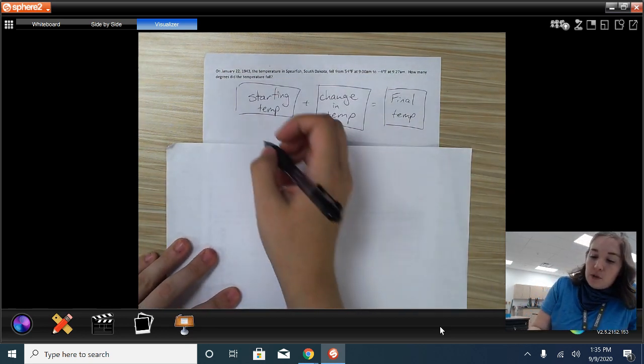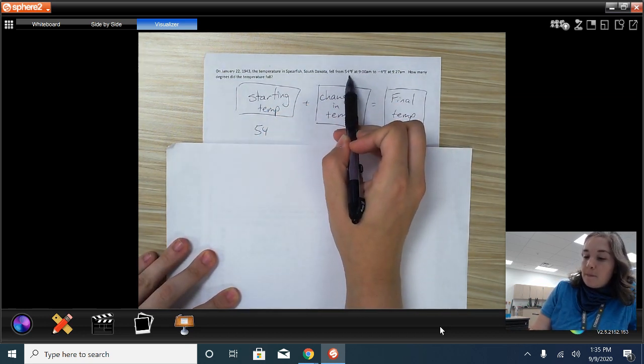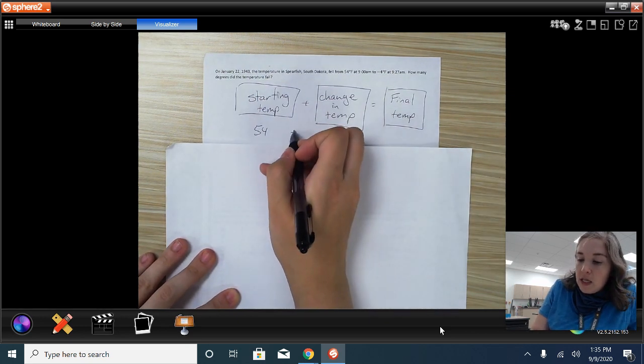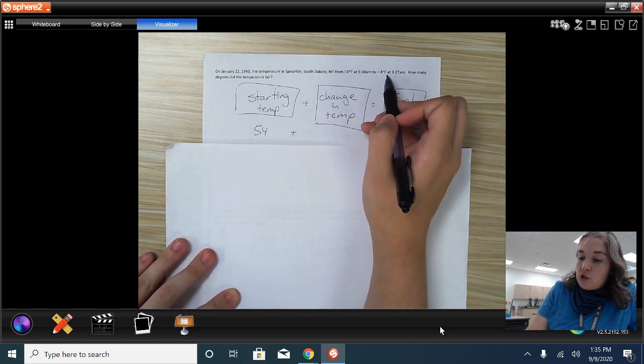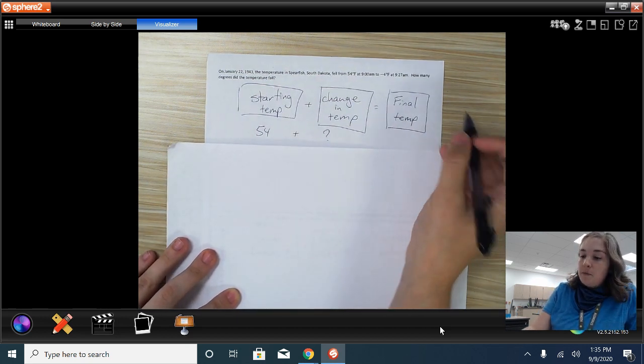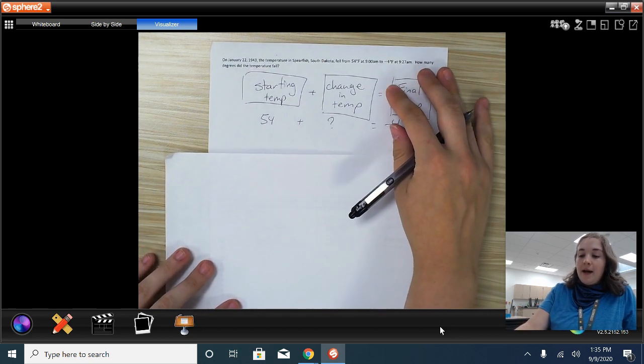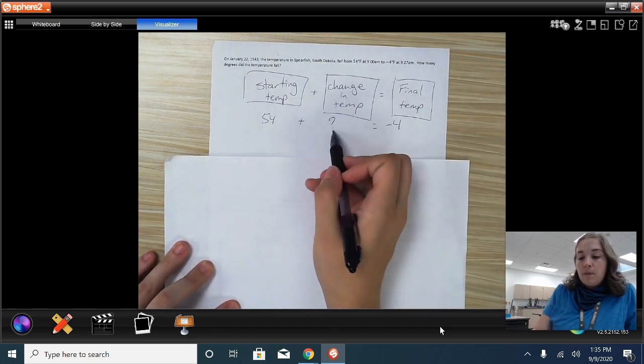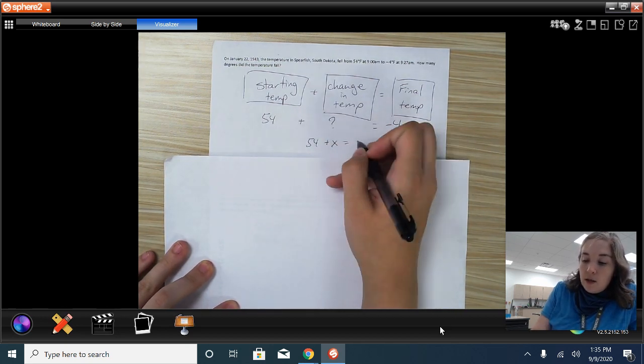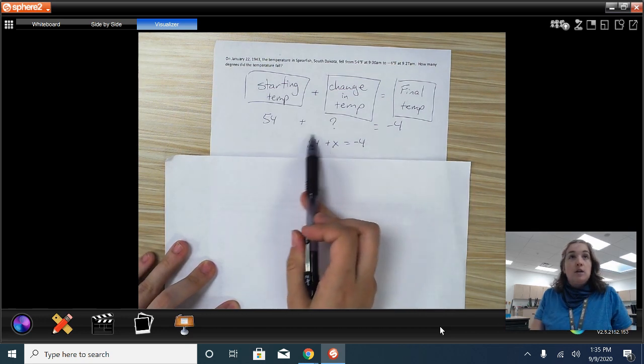So our starting temperature, it said, was 54 degrees Fahrenheit. We don't need to care about the time, right? It's not asking us for a rate or anything. And then our change in temperature, we don't know. So that's our question mark or our variable. And then our final temperature is negative 4 degrees. I am feeling uncreative, so I'm going to put in X here. So we have 54 plus X is equal to negative 4. So that is our equation that we're going to use to solve this.